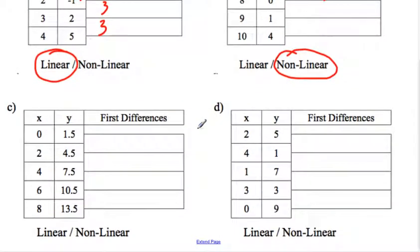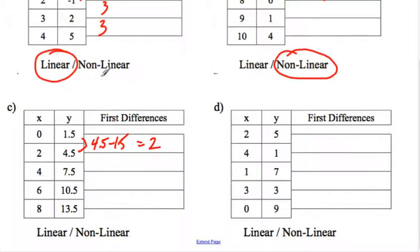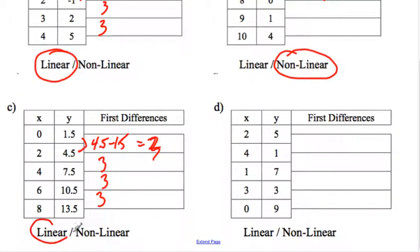Let's look at C. Check the X column: 0, 2, 4, 6, 8 — going up by 2s, that's good. So let's do the first differences. 4.5 subtract 1.5 — that's 3. 7.5 subtract 4.5 — 3. 10.5 subtract 7.5 — 3. 13.5 subtract 10.5 — 3. All of them the same; these were all going up by the same number. Linear.